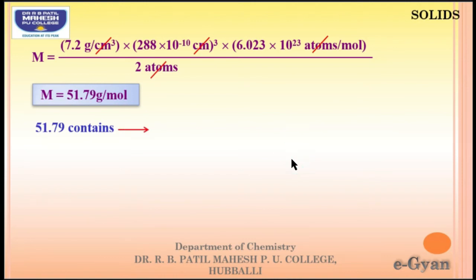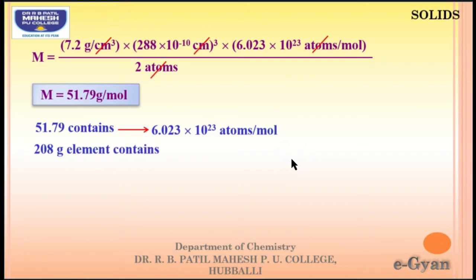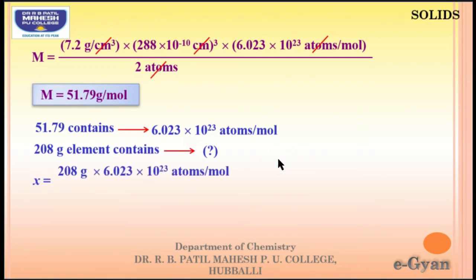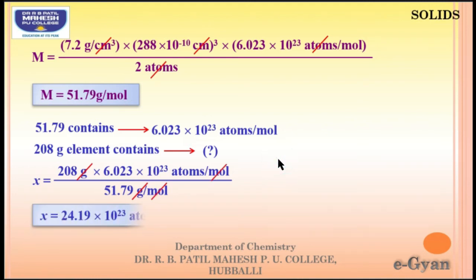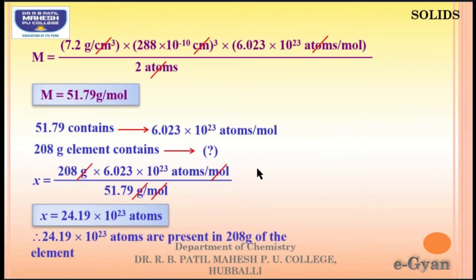51.79 g contains Avogadro's number of atoms. To find the number of atoms in 208 g: x = 208 × 6.023 × 10²³ / 51.79. On solving, x = 24.19 × 10²³ atoms. Hence, 24.19 × 10²³ atoms are present in 208 g of the element.